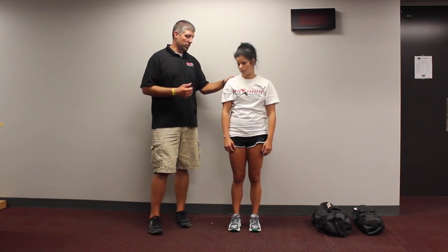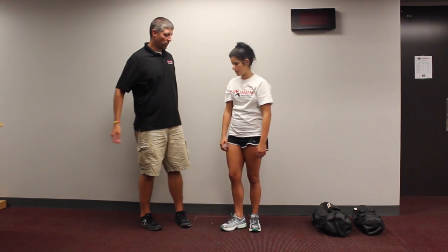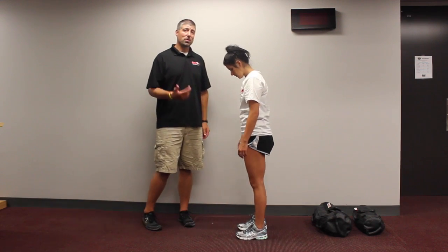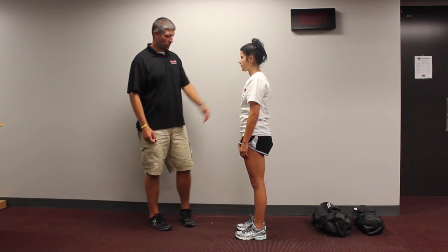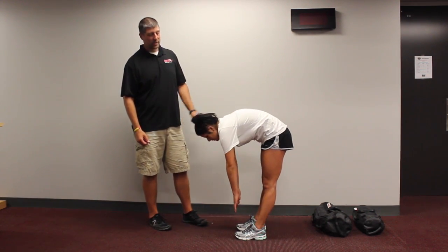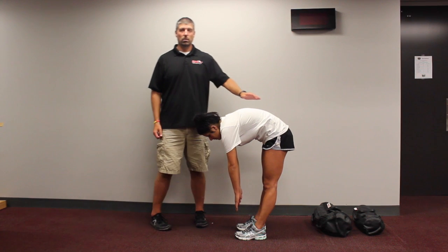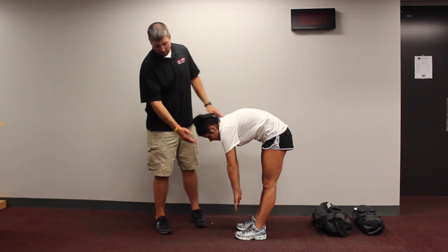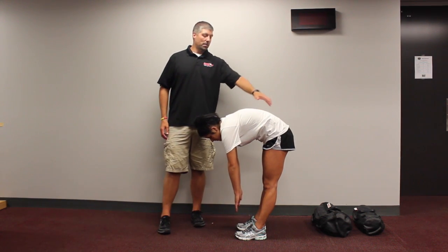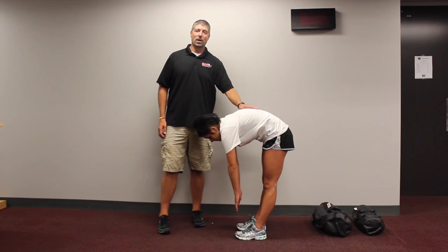A really easy one to pick up is with the toe touch. If I have her go ahead and try to touch her toes — go ahead and turn and face me — what you'll see is a lot of people, when you say touch your toes, they can't. Notice she can only get so far here. She can't give me a full good toe touch and doesn't have a great hip hinge here.